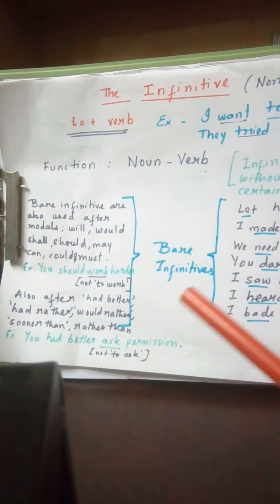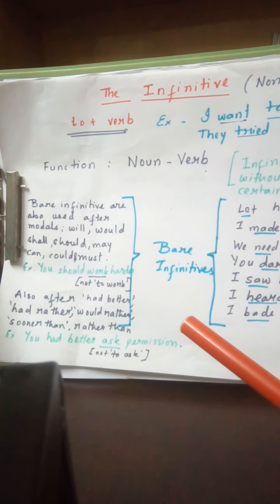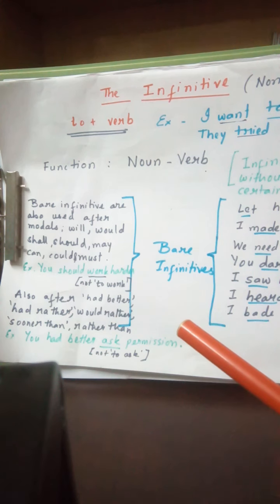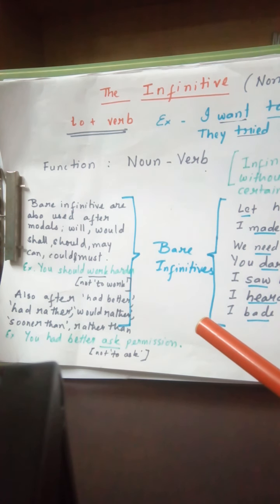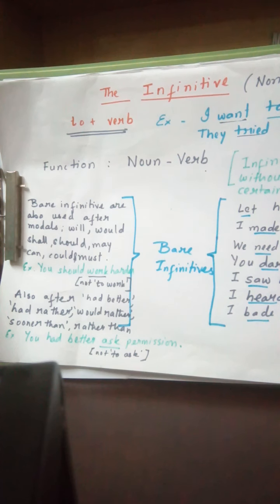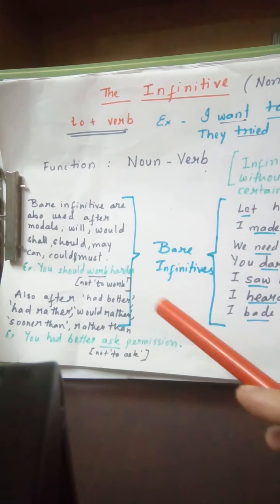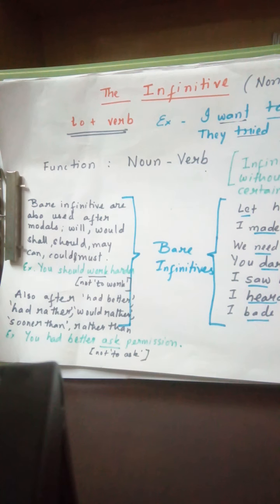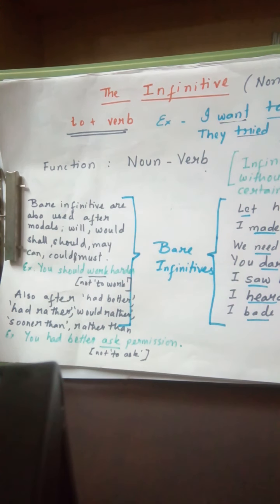There are a few other types of bare infinitives. When we use the modals — will, would, shall, should, can, could, must — we do not use 'to' with them; we use bare infinitives. For example, 'you should work harder,' not 'you should to work harder.' However, with 'ought,' we do use 'to' — 'you ought to work harder.' That is the one exception; most other modals use bare infinitives.